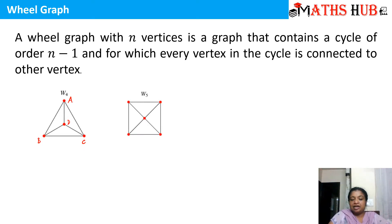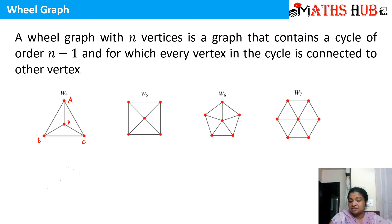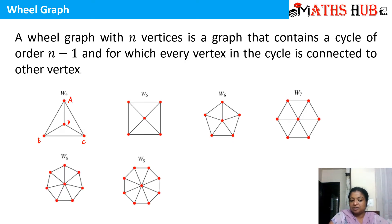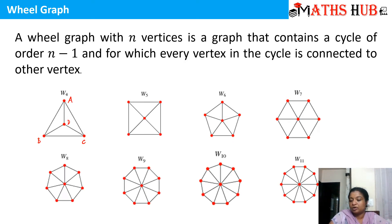Similarly, you can check W5 — wheel graph with 5 vertices, wheel graph with 6 vertices, 7 vertices, 8 vertices, 9 vertices, 10 vertices, and 11 vertices.